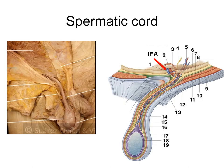The Spermatic Cord suspends the testis in the scrotum and is a collection of structures that pass through the inguinal canal to and from the testis. The Spermatic Cord begins at the deep inguinal ring, lateral to the inferior epigastric artery, and ends at the testis.